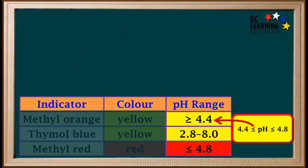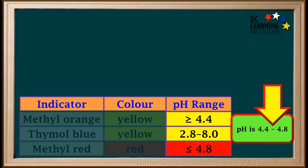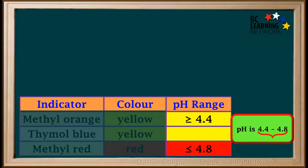Because the pH is greater than or equal to 4.4 and less than or equal to 4.8, it means pH is somewhere between 4.4 and 4.8 inclusive. Notice that the range 4.4 to 4.8 is well within the range 2.8 to 8, so the range thymol blue gives us does not help to narrow down the pH range of 4.4 to 4.8, which is our answer.